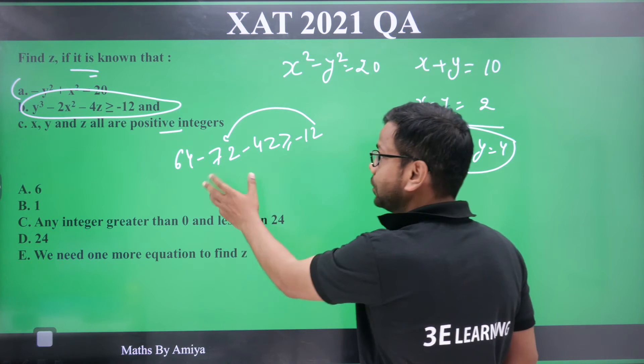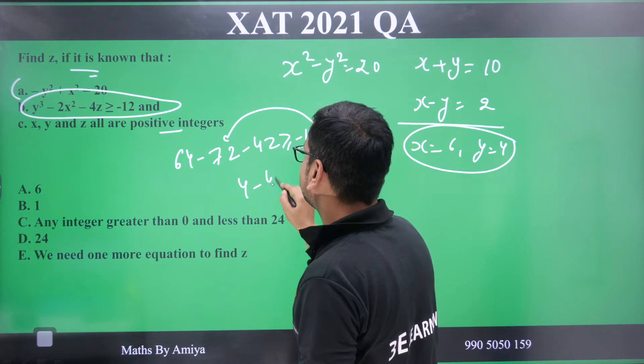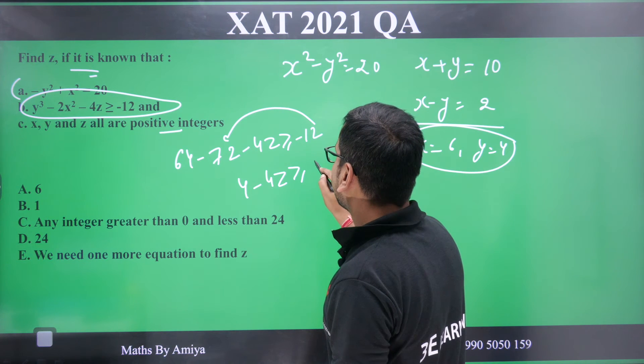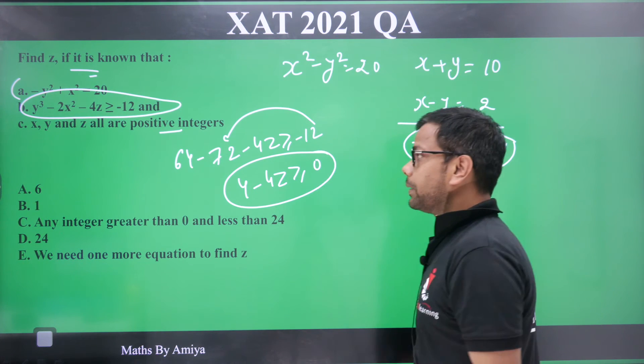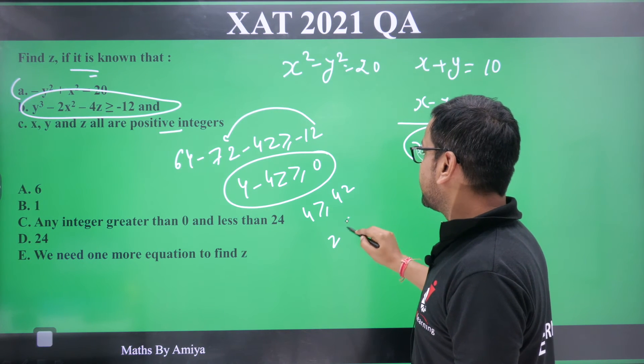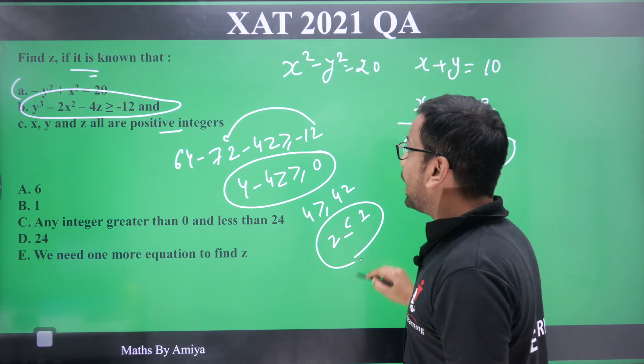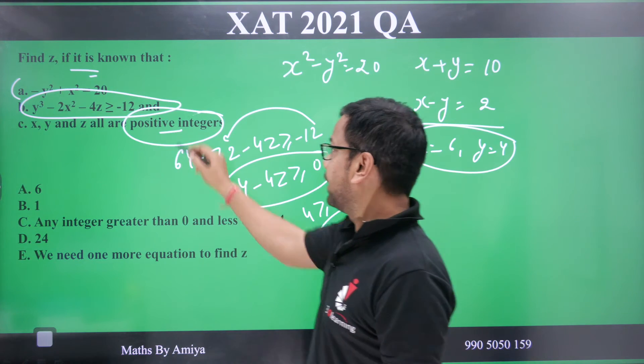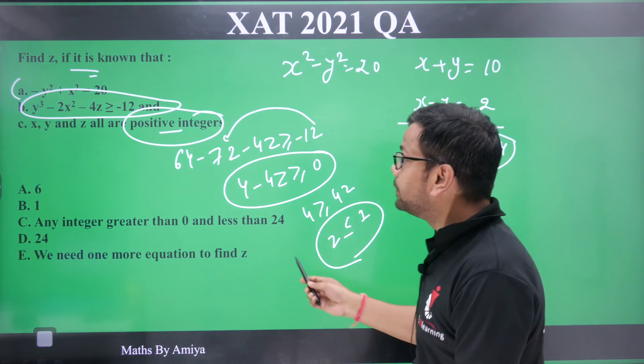Minus 12, here is 60, 4 minus 4z is greater than 0, here 4 is greater than 4z, z is less than equal to 1. Now z positive integer is less than equal to 1, means z is 1.